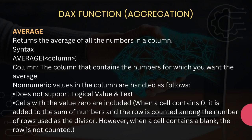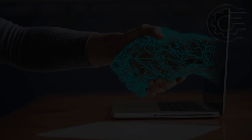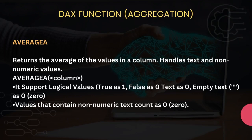If a cell contains zero, AVERAGE includes it, but it still does not support logical values and text type data. AVERAGEA returns the average of values in a column but can handle text and non-numeric values as well — unlike AVERAGE. The syntax is AVERAGEA(column name).